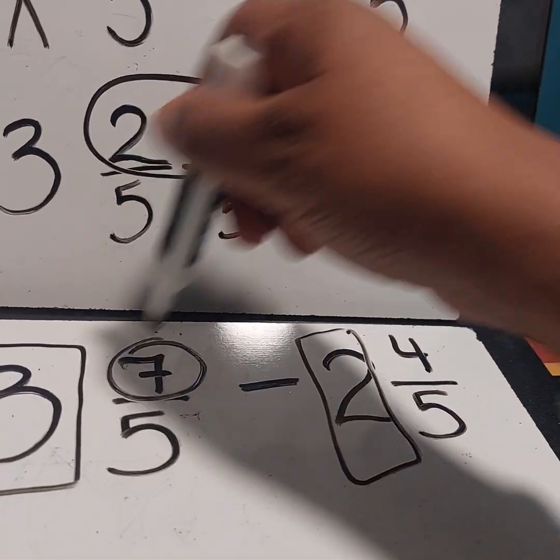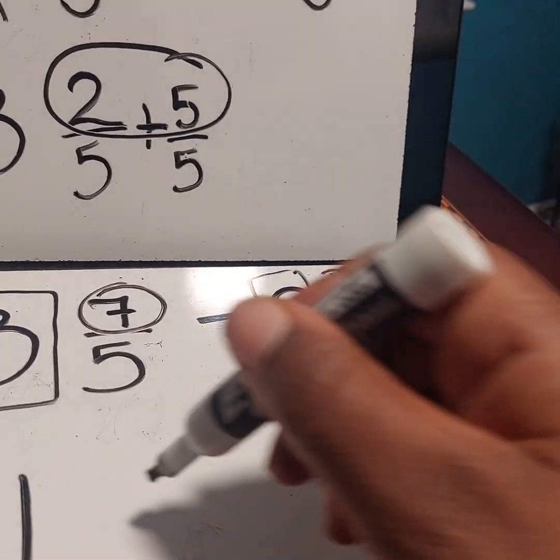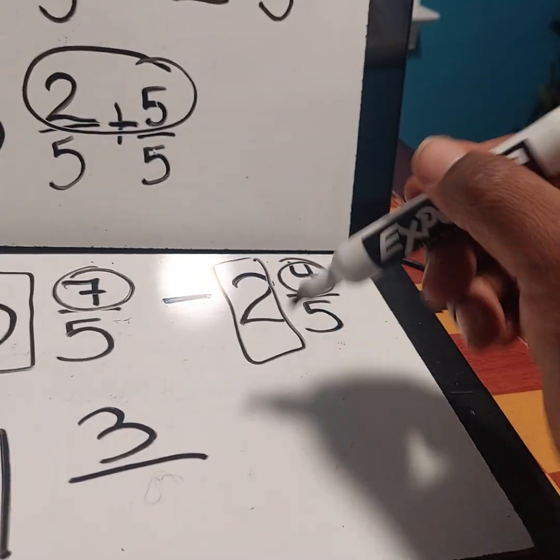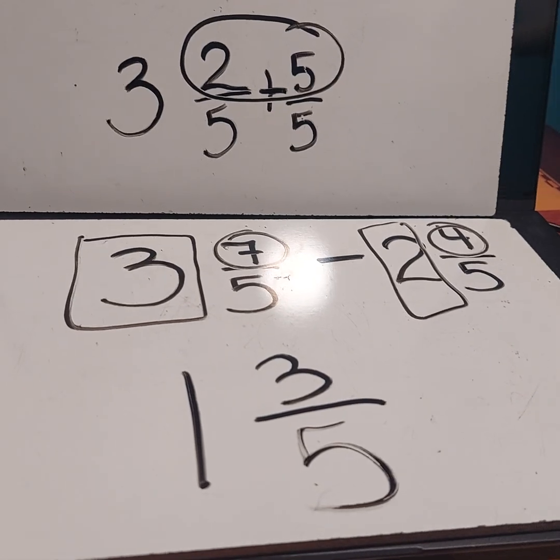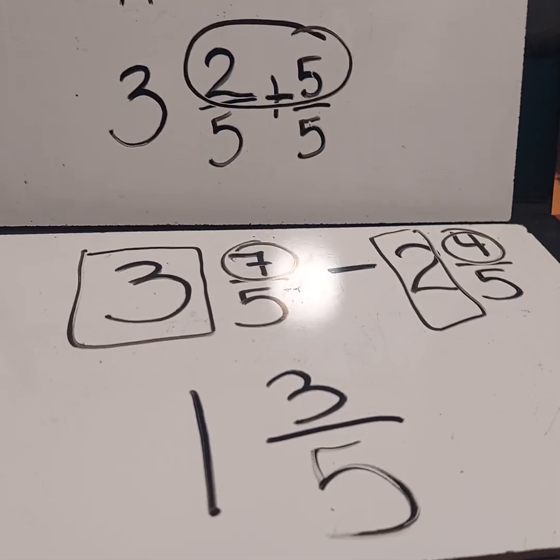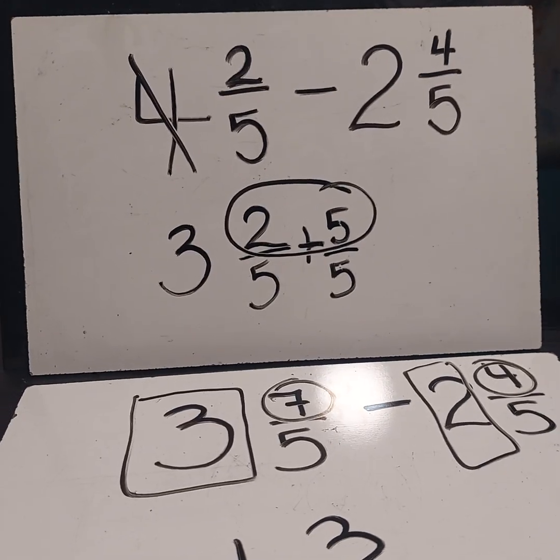And 7 take away 4 is going to give me 3. And my denominator stays the same. So my answer is going to be 1 and 3 fifths. Okay, guys. See you soon.